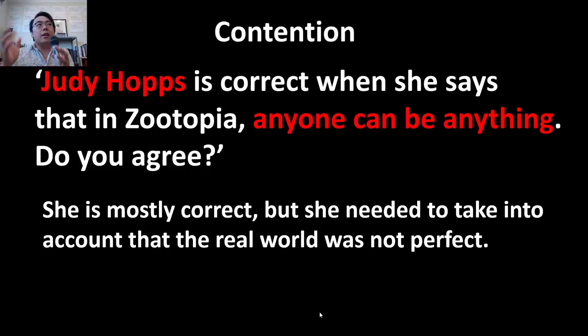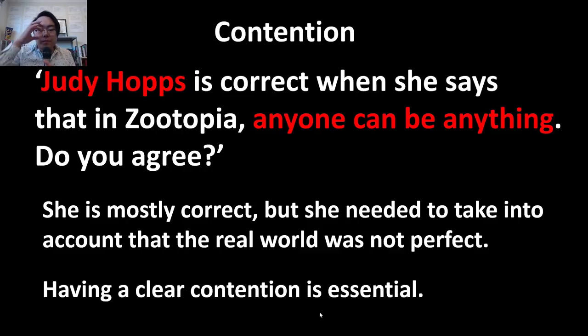So you say she's mostly correct, but she needed to take into account that the real world was not perfect. So basically, what is that saying? It's saying that anyone can be anything, to a certain extent, but it's really difficult to become anything. If you've seen the film Zootopia, Judy takes her passion, she takes her willpower, she expresses that through almost everything that she does. But that's incredibly difficult to do. So having a clear contention is essential. I love to think of it as being kind of on a graph of 0 to 100, where 0 is I completely disagree with this prompt, 100 is you completely agree. But the thing is that a good contention, or at least the ones the assessors are looking for, is always going to be somewhere in the middle.